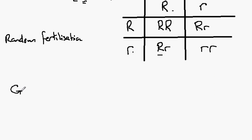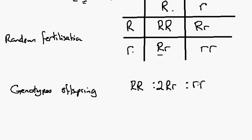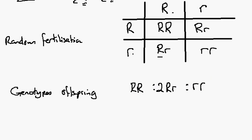Looking at the genotypes of the offspring, we have big R, big R, there's one of those. There's two big R, little r's, and there's one little r, little r. It's important to remember that these are probabilities or chances, not numbers.